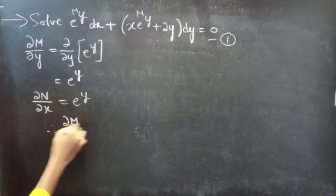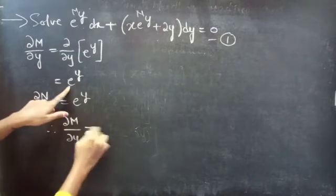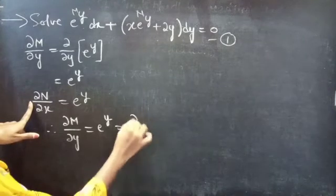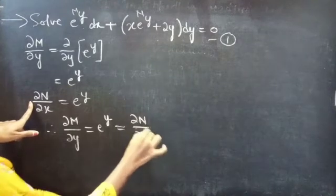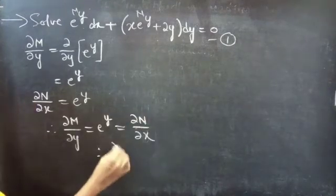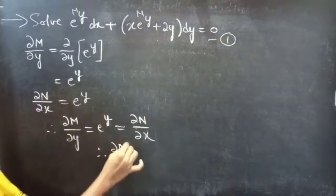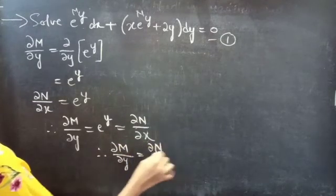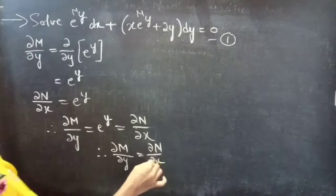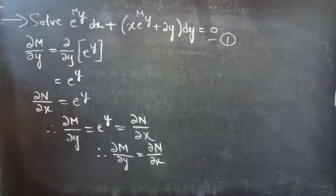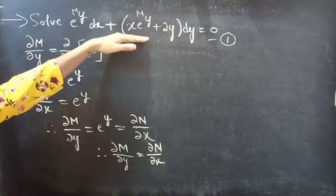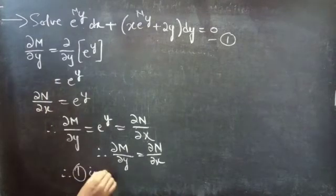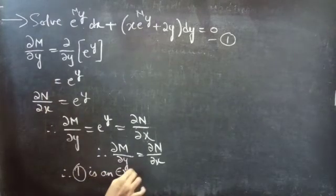Therefore, the partial derivative of M with respect to y equals e power y, and also e power y equals the partial derivative of N with respect to x. From this, we can say that dou M by dou y equals dou N by dou x. Since dou M by dou y equals dou N by dou x, the given differential equation is an exact equation. Therefore, equation 1 is an exact equation.